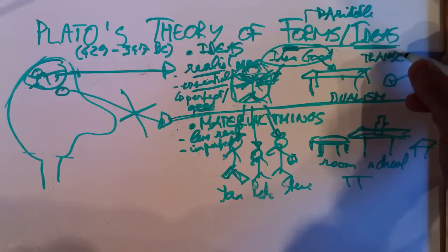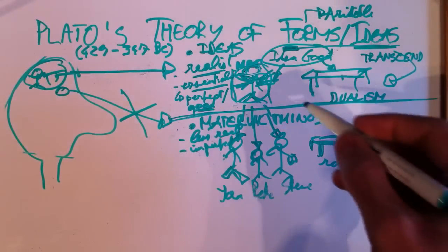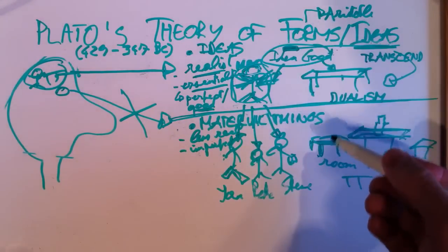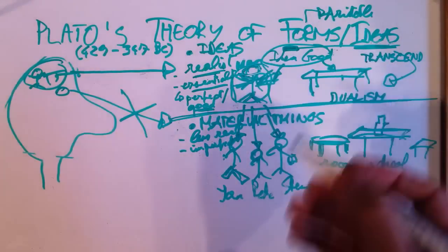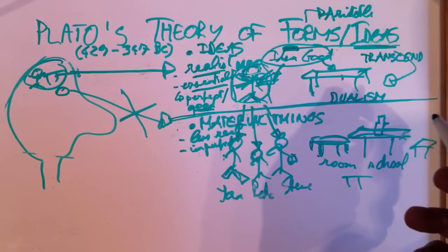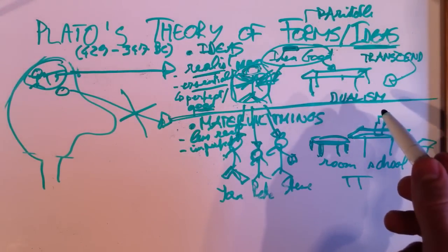Transcendent. Transcend just means to be higher, to go higher, to be lifted up higher. Okay. So Plato is a dualist.